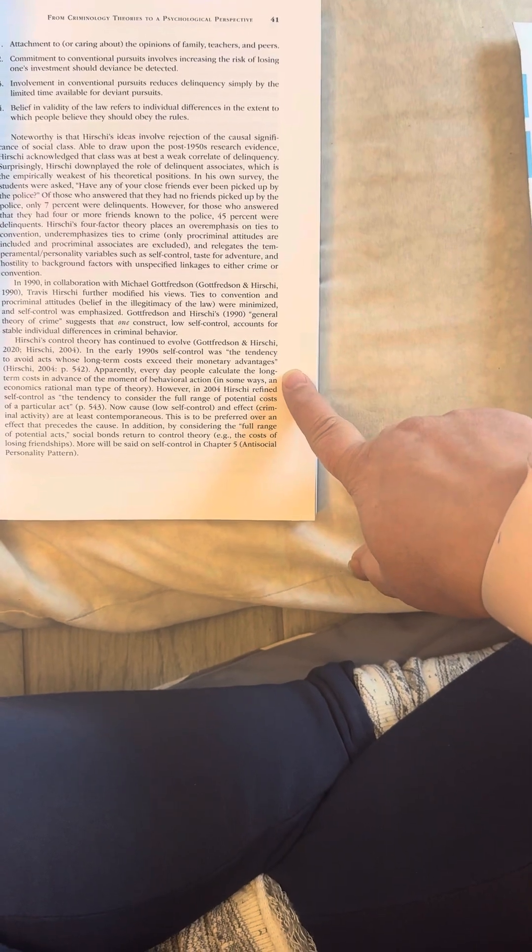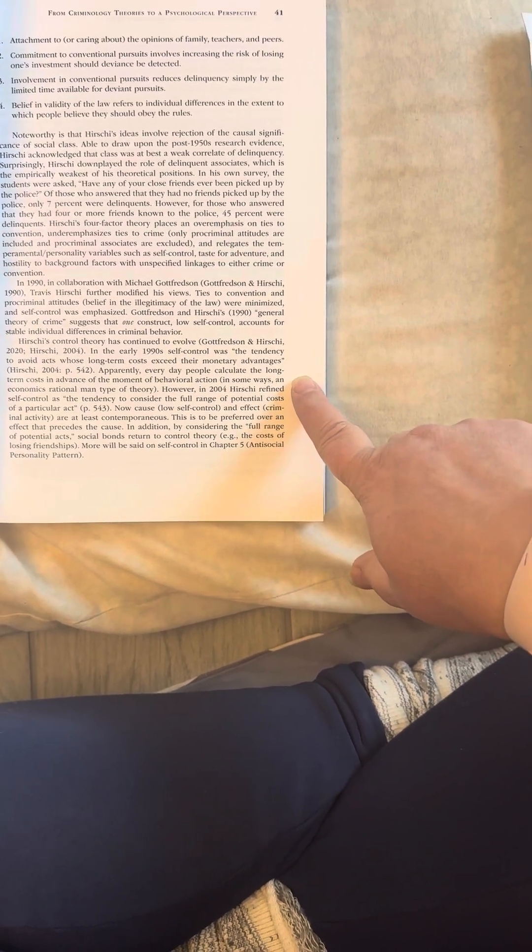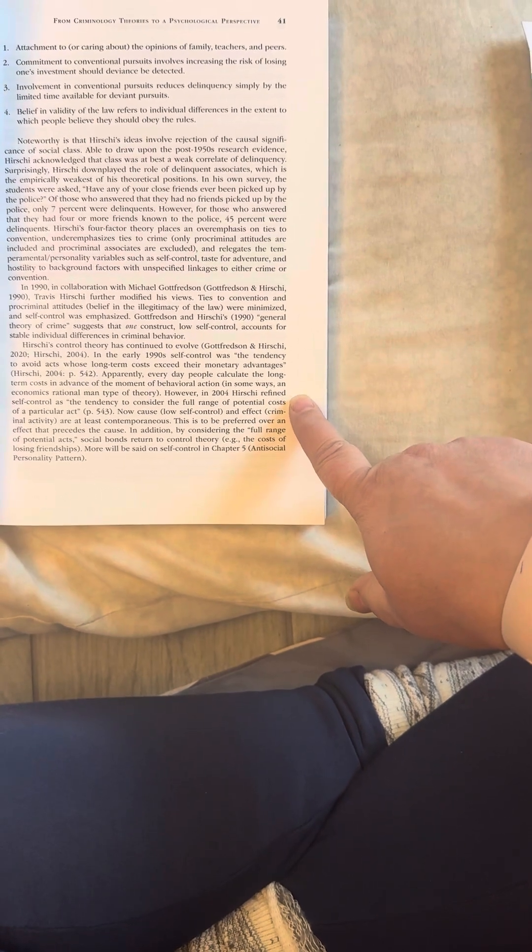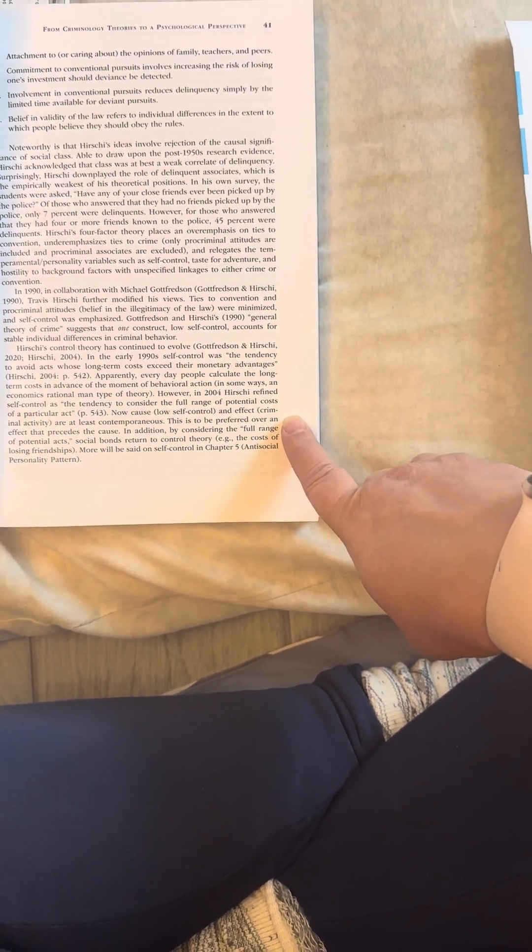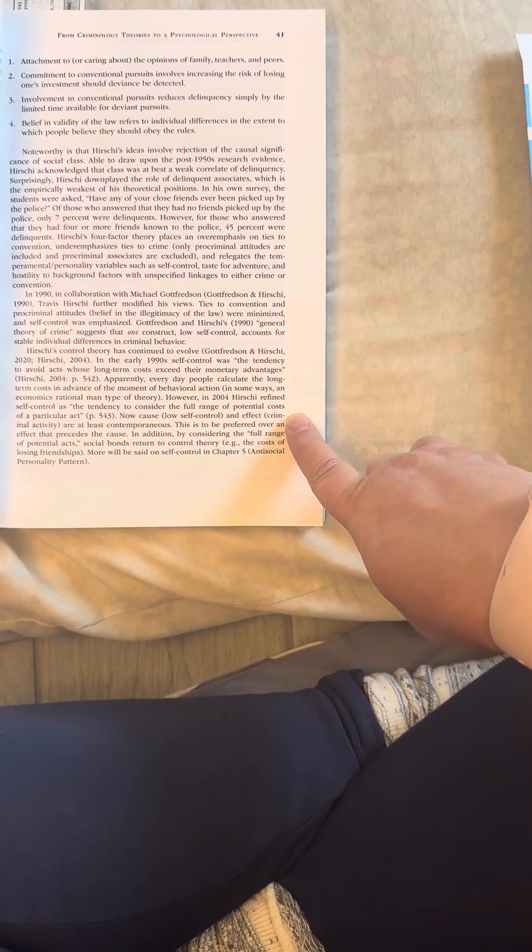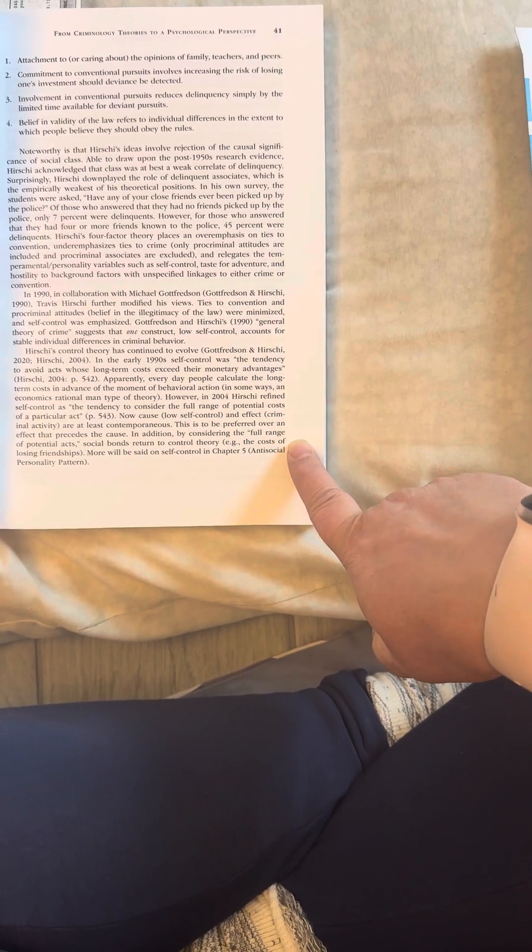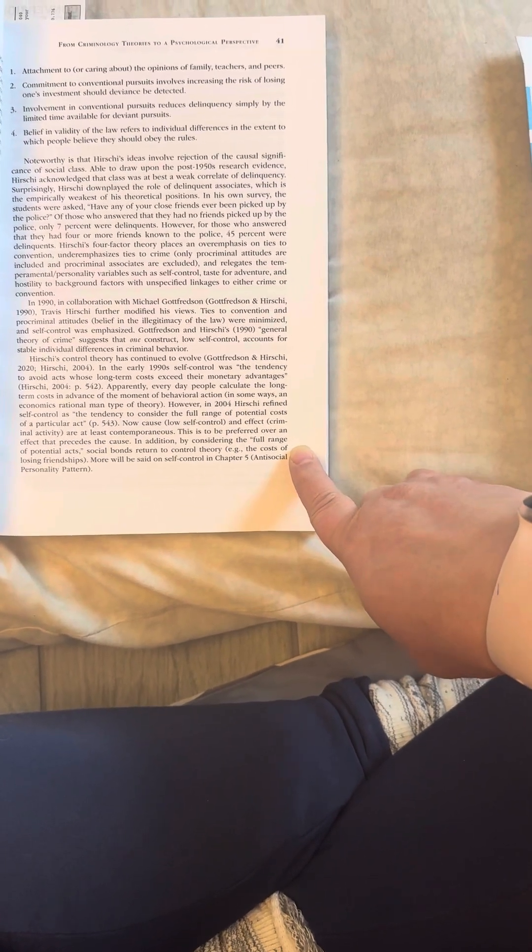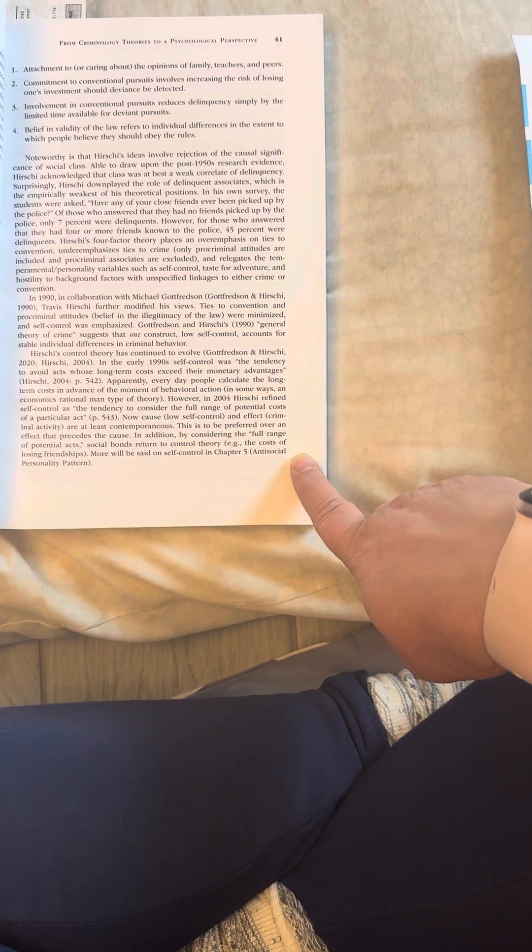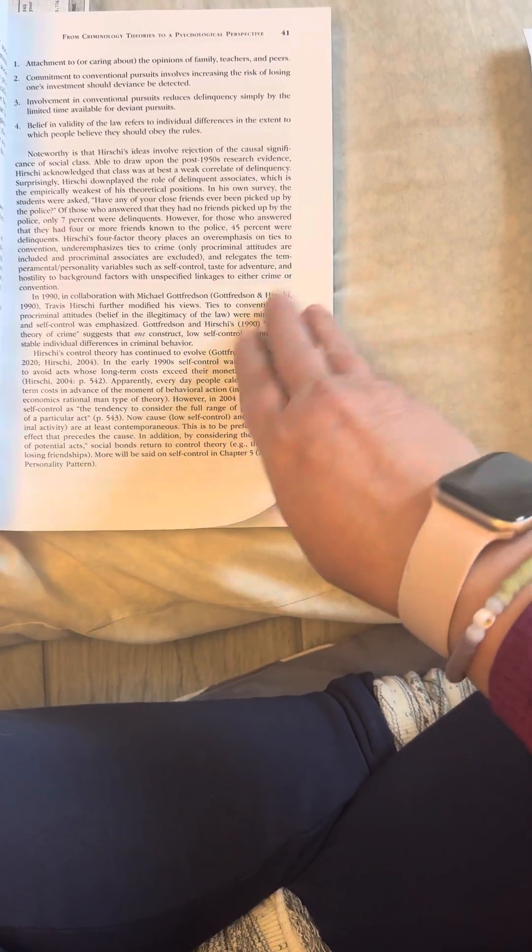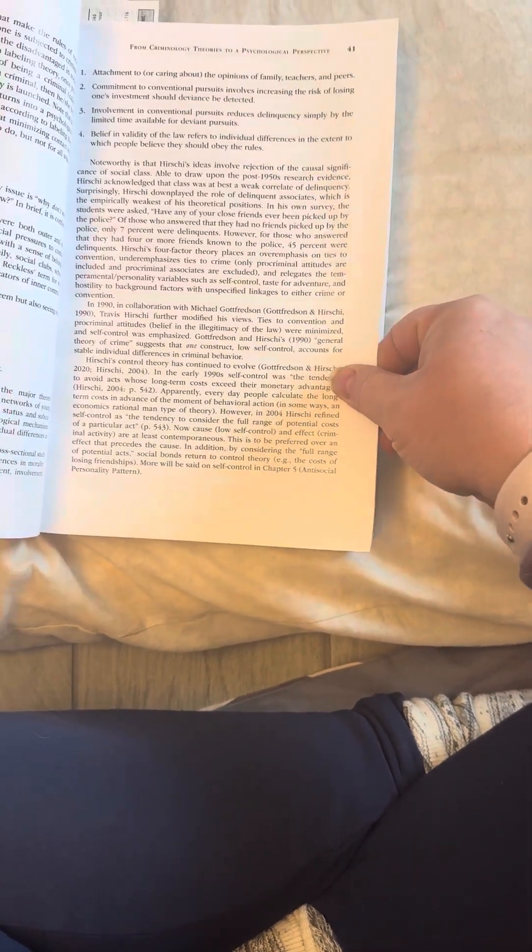Gottfredson and Hirschi, in the early 1990s, self-control was the tendency to avoid acts whose long-term costs exceed their momentary advantages. Apparently, every day, people calculate the long-term costs in advance of the moment of behavioral action, in some ways, an economics rational man type of theory. However, in 2004, Hirschi refined self-control as the tendency to consider the full range of potential costs. Now, cause and effect are at least contemporaneous. This is to be preferred over an effect that precedes the cause. In addition, by considering the full range of potential acts, social bonds return to control theory. Example, the cost of losing friendships. More will be said on self-control in Chapter 5, Antisocial Personality Pattern.